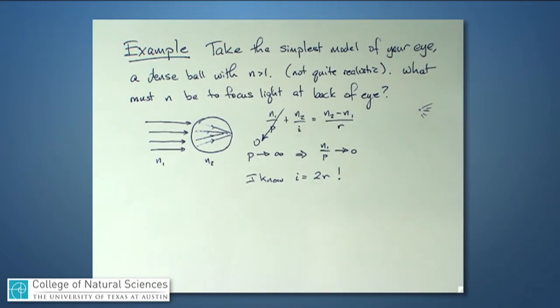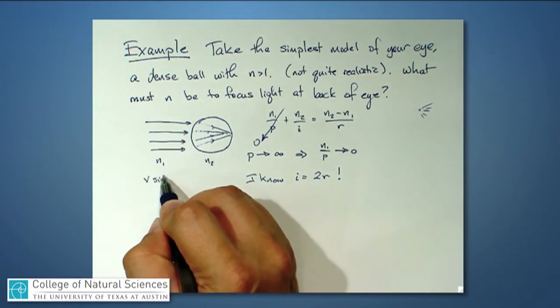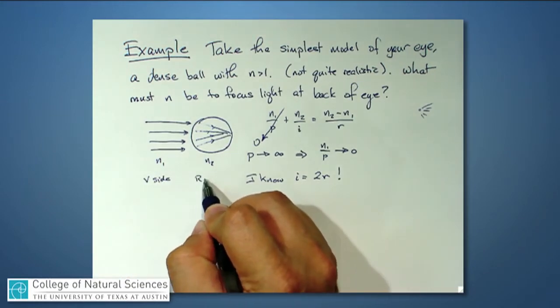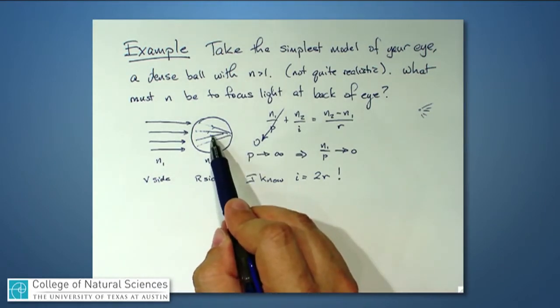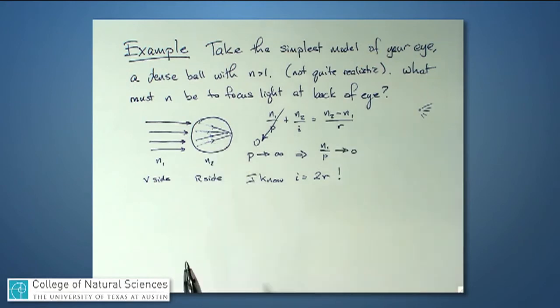And I haven't thought too carefully about the signs, but let me think about that real quickly. This is the V side over here, this is the R side over here. The center of curvature of this ball is right there, and so it's over on the R side, so R will be a positive number.